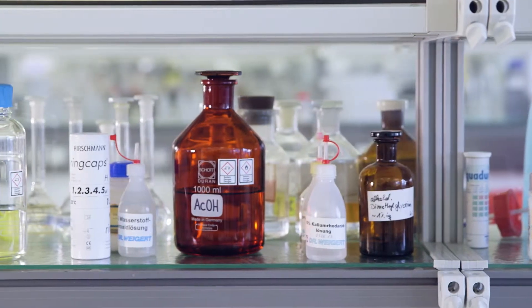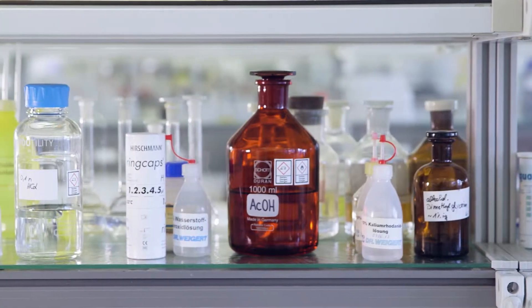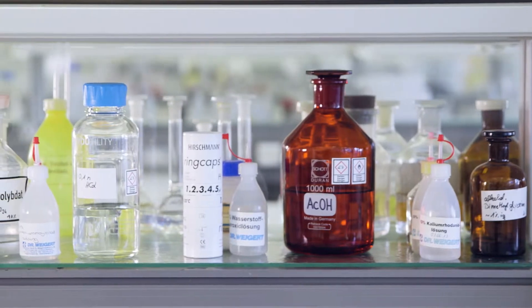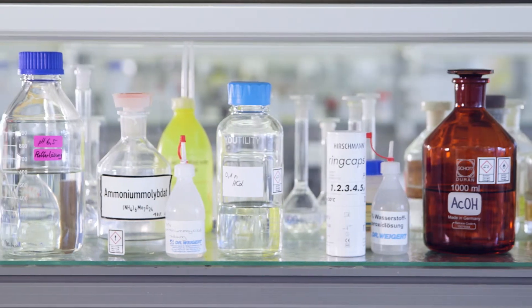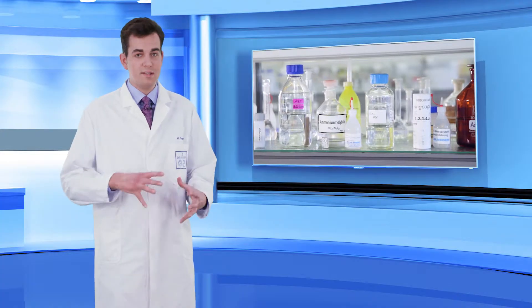There are various types of paper labels and label glues that can be effectively removed in different ways. The choice of labels is determined by the respective test conditions on site. This, in turn, leads to different reprocessing methods.